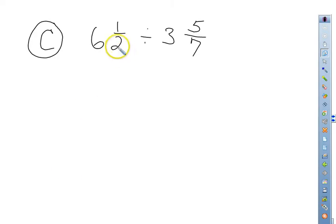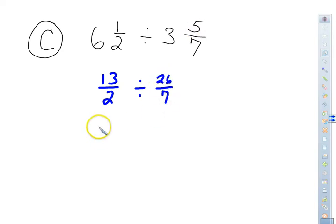So now I have 6 times 2 which is 12 plus 1 is 13 over 2. Again rewriting it so that I have fractions first before I do any reciprocals. 7 times 3 is 21 plus 5 more is 26 over 7. Now I need to change it to multiplication, leaving the first fraction as is, multiplication and reciprocal which is going to give me 7 26ths.